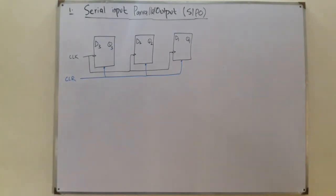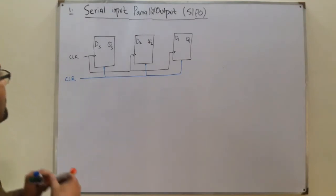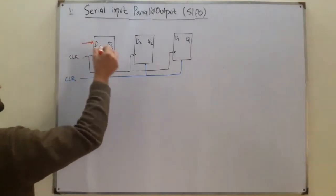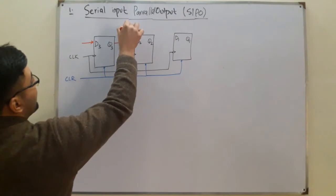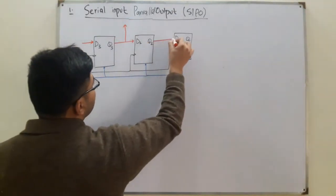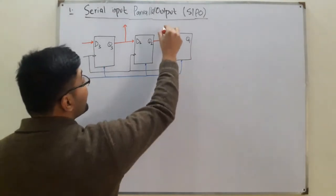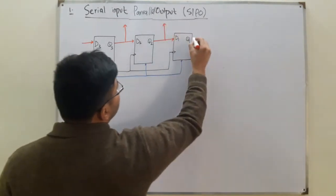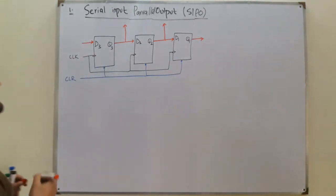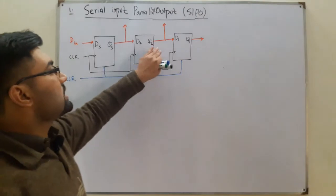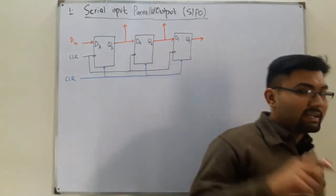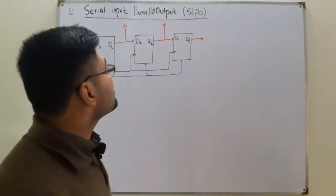Let's say we want to store 3-bit data. For serial input parallel output, all three output terminals are exposed. We have access to Q3 — Q3 is connected to D2 internally, but we also have access to it as a direct output. Q2 is connected to D1 internally, but we also have direct access to it. This is Q1. In the previous SISO mode, we didn't have access to Q3 and Q2, but in this case we do.